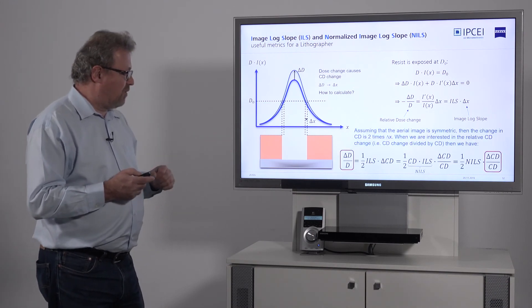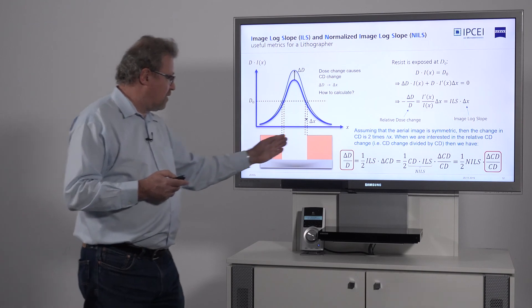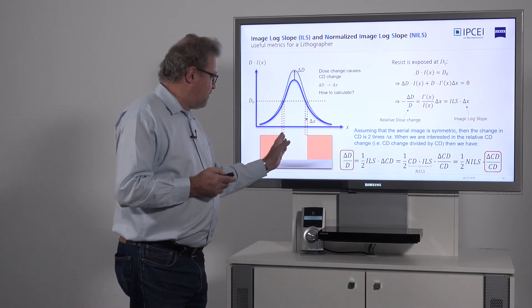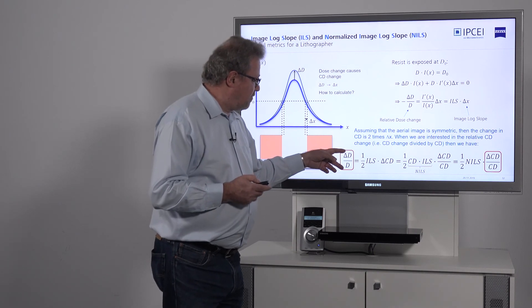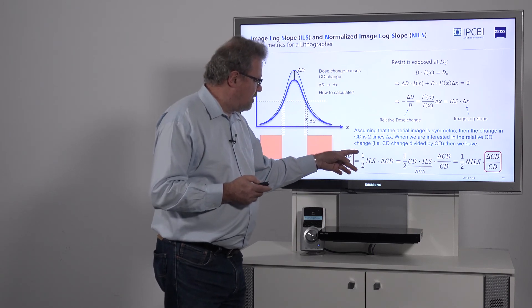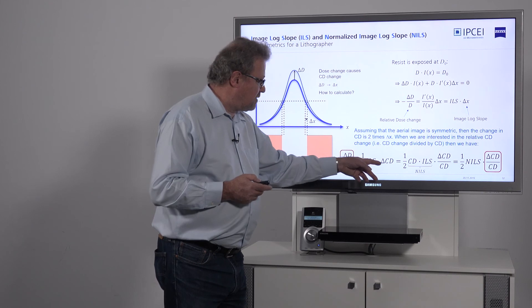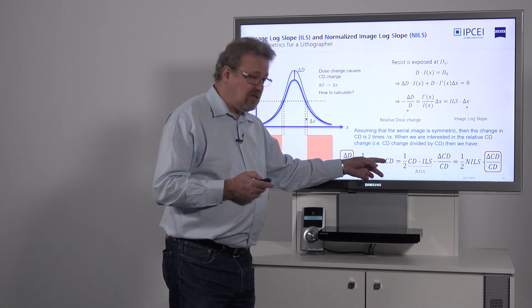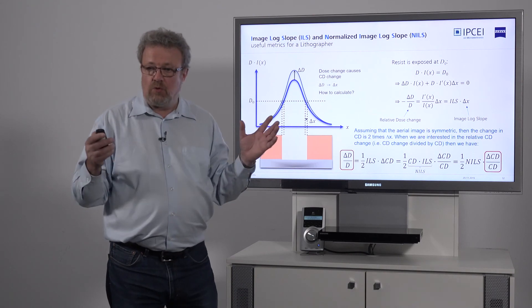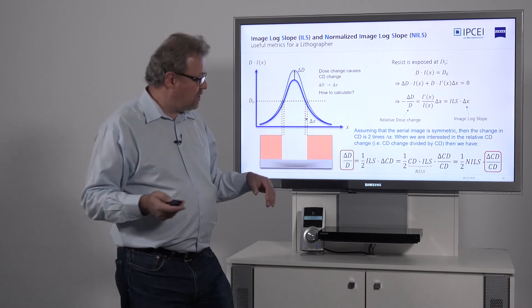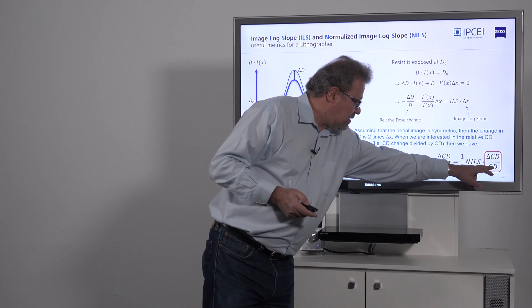Of course, when we talk about feature sizes, we don't talk about the edge. We have the same movement on the other side. So the relative dose change is half of the ILS times the CD change. If I also want the CD change normalized as a percentage, then I divide by CD.